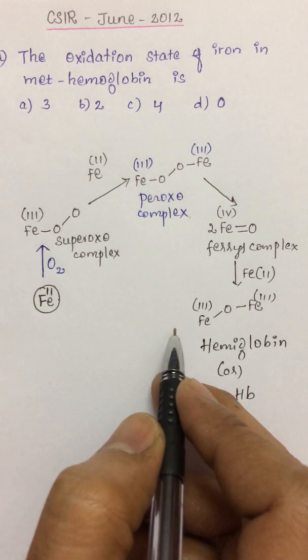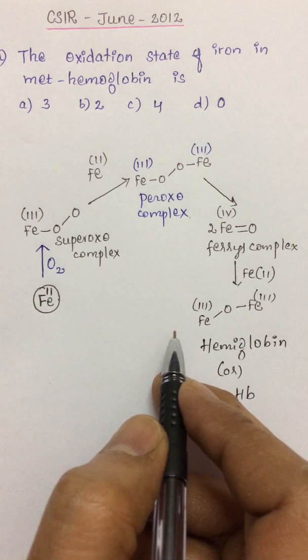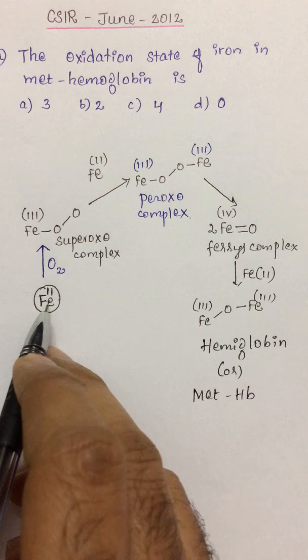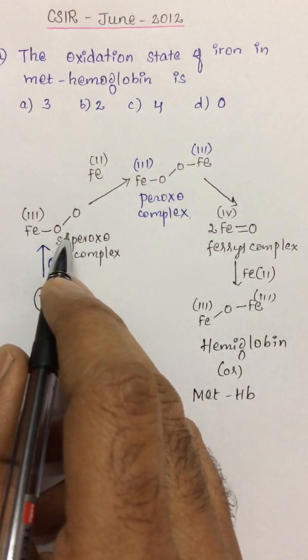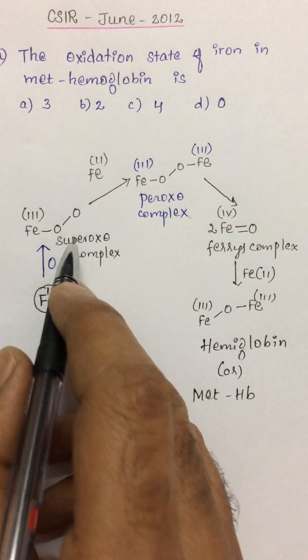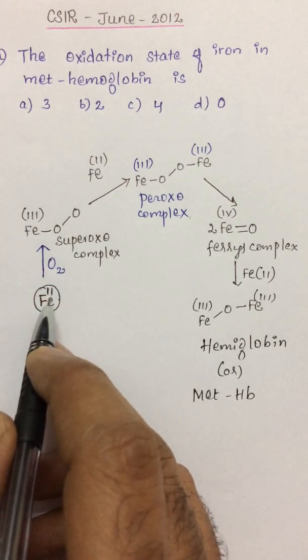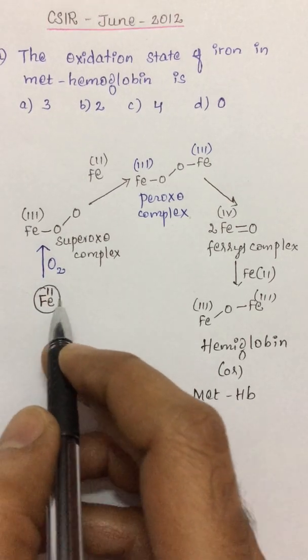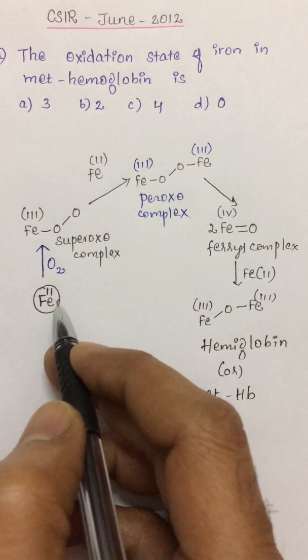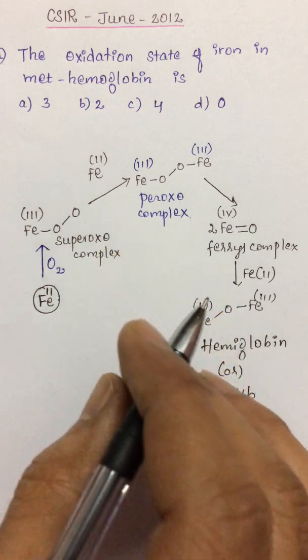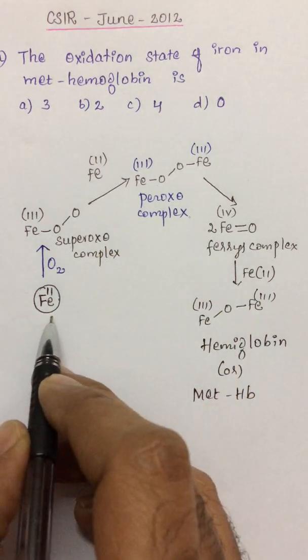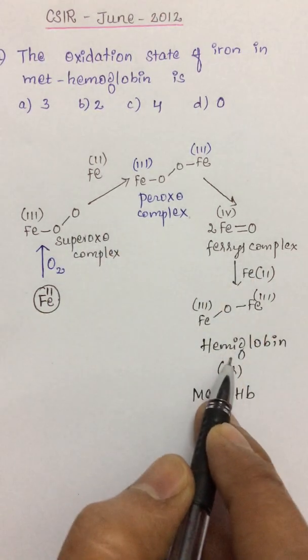Well, in hemoglobin we are aware that there are four subunits, and one subunit is able to interact with another subunit, but usually it will not happen because there is a protein chain called the globin chain that will protect all the subunits and does not allow any subunit to interact with another subunit.